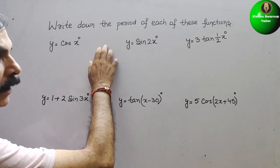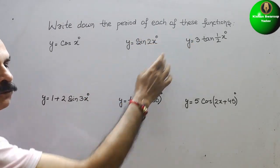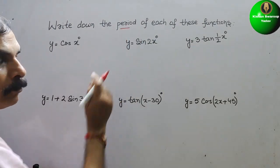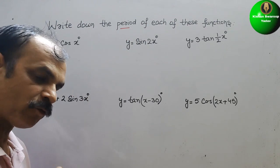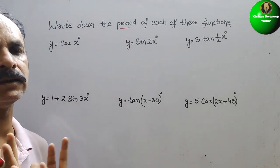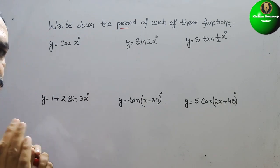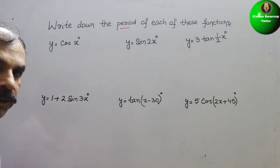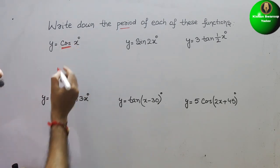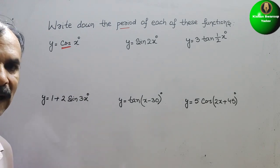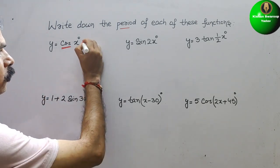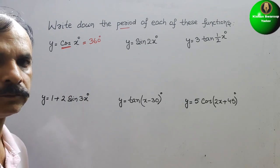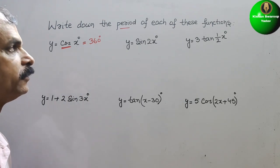The question is: write down the period of each of these functions. Period means when a function completes one complete cycle. First, we see y = cos x degrees. We know cos will complete one complete cycle in 360 degrees, so the period is 360 degrees.